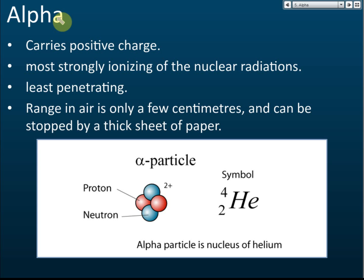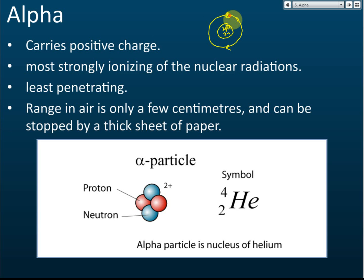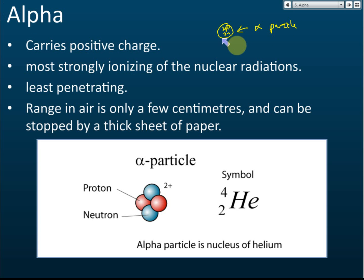The first is called the alpha emission. An alpha emission consists of particles — specifically, an alpha particle is a nucleus of helium. Helium consists of two protons, two neutrons, and two electrons. If we remove the electrons, leaving just the nucleus with two protons and two neutrons, this is called the alpha particle.